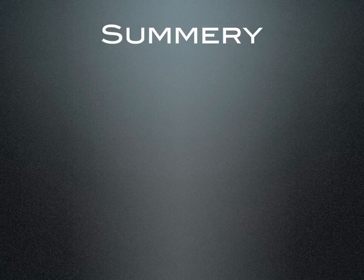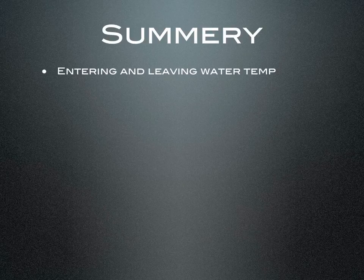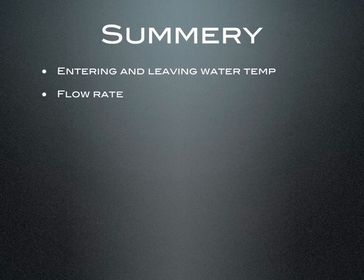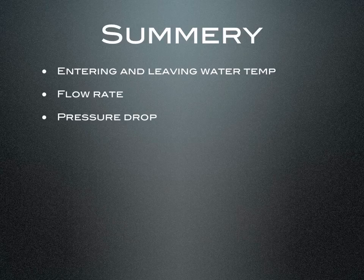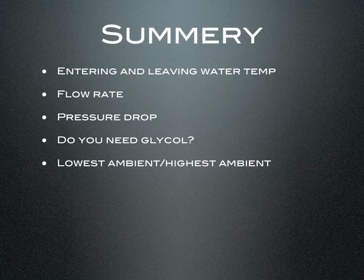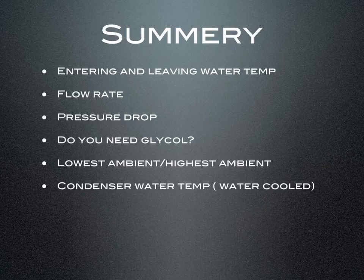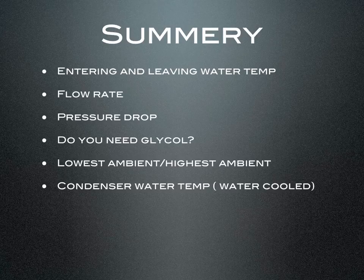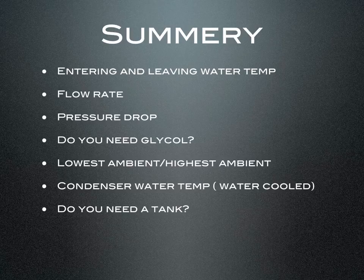Let's summarize what we need to know to size a chiller properly. First, you need to know the entering and leaving water temperature to your equipment, what flow rate you need, and the pressure drop through your piping and equipment — that will help select your pump. You need to find out if you need glycol, and what the lowest and highest ambient temperature is where the chiller will be placed. If you have a water cooled chiller, find out what the condensing water temperature is — that's the temperature of the fluid from the building water or cooling tower. And determine if you need a tank; if there is not enough fluid in the piping, you need to go with a tank.